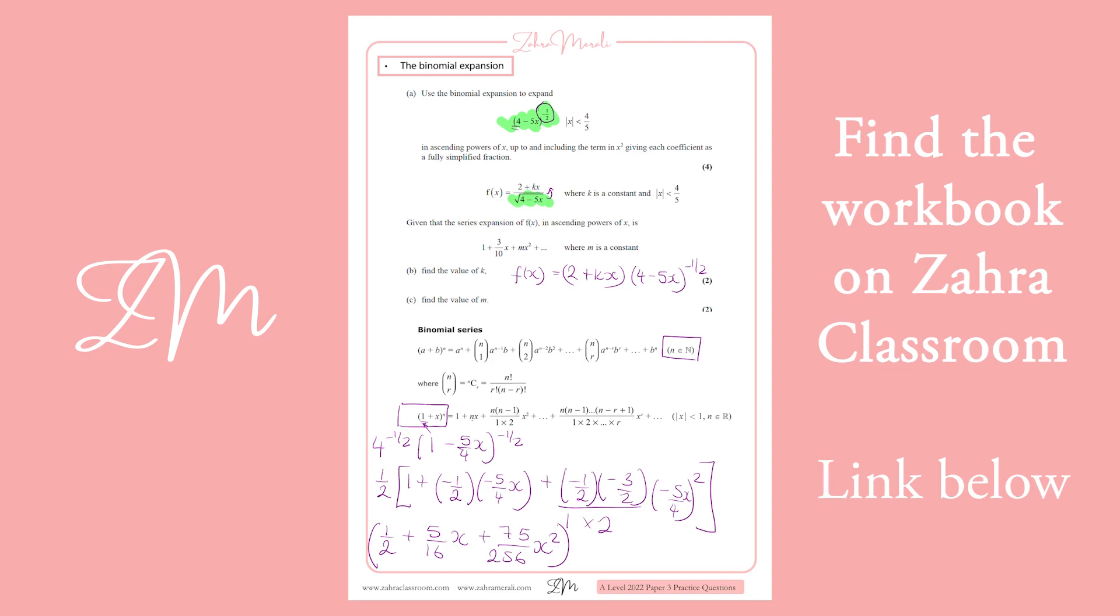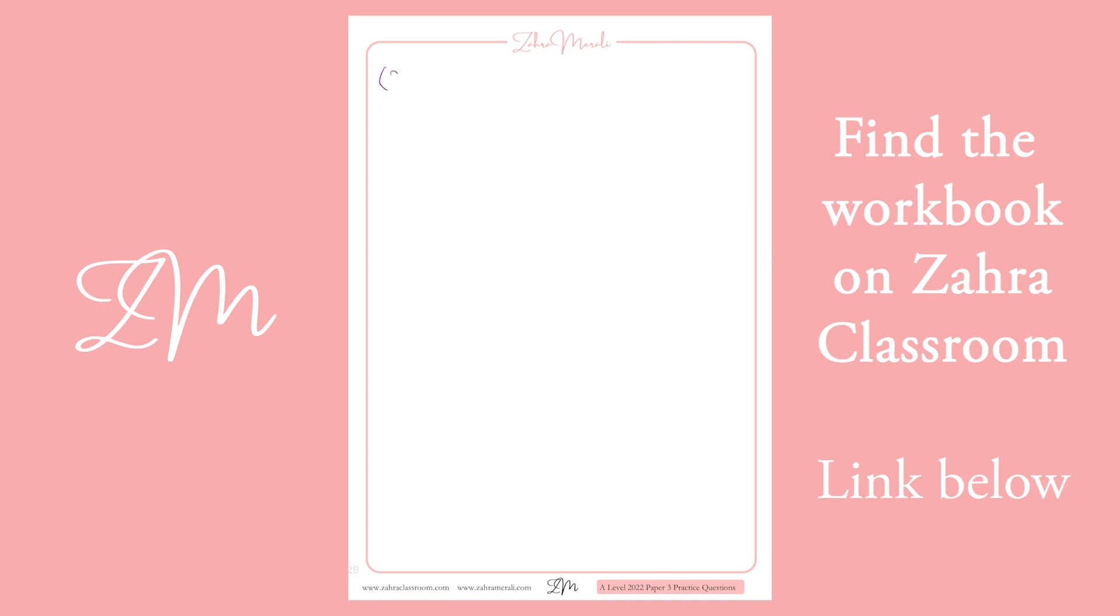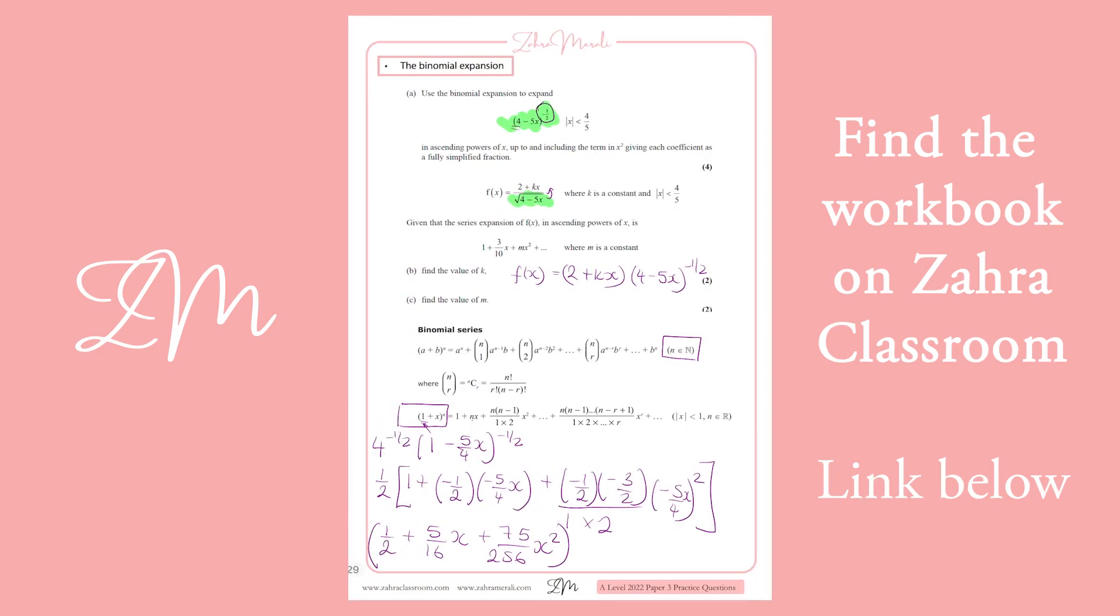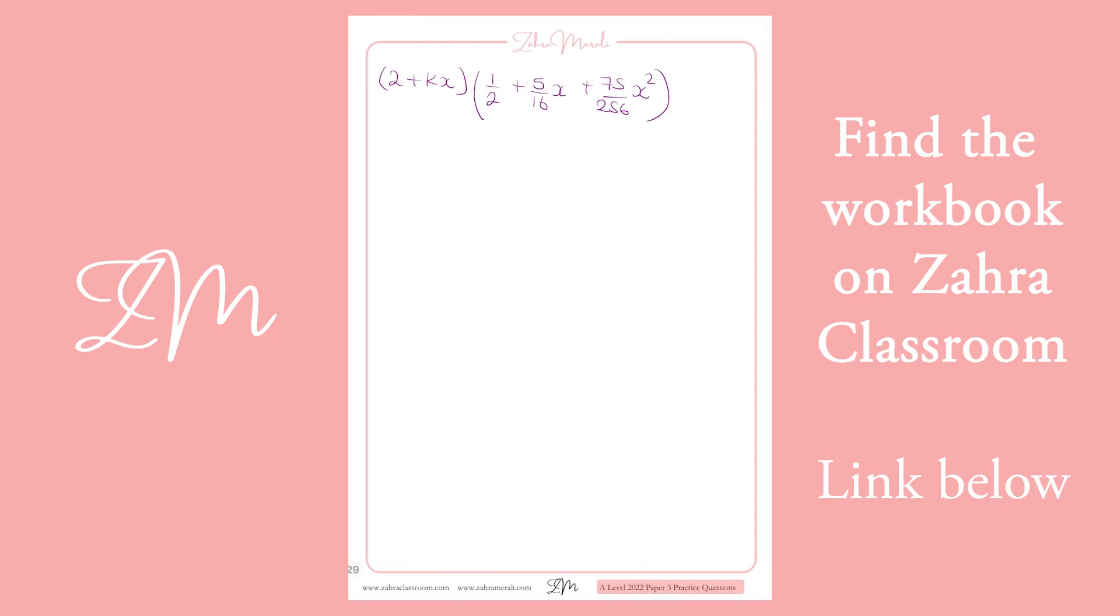So we want to multiply this that we've got here by 2 plus kx. So we can start off by doing that. So we've got 2 plus kx multiplied by a half plus 5 over 16x plus 75 over 256x squared. And what we're trying to do is we get told that we have 1 is still 1, but the x term is 3 tenths.